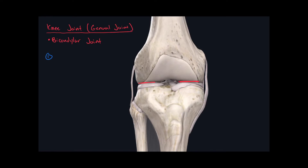The first component is a meniscus — it's the lateral meniscus, so it's called the lateral meniscus of the knee joint. Similarly, we have one on the medial aspect, so this one is called the medial meniscus of the knee joint.